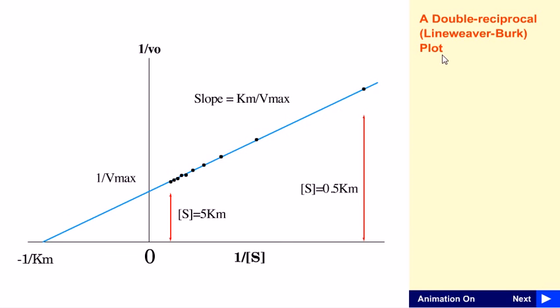If we know the initial substrate concentration and the initial velocity, which is V0, then you can easily get the value of Km and Vmax by using this Lineweaver-Burk plot. That is why scientists started to use this.